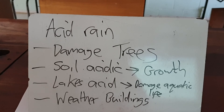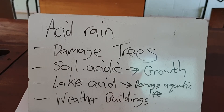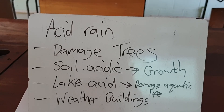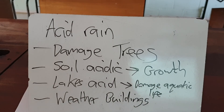If you google churches with stone limestone gargoyles or statues, there are some pretty striking images. These were works of art that survived for 500 years, but when the Industrial Revolution arrived, much more acidic rain from burning hydrocarbons really sped up the weathering of these structures.